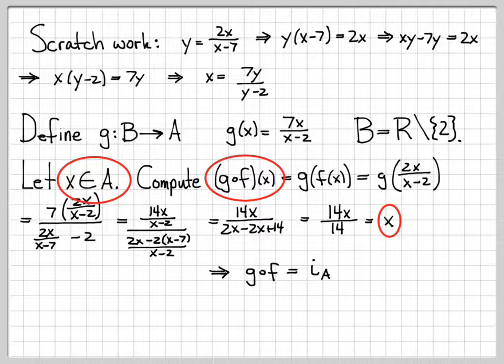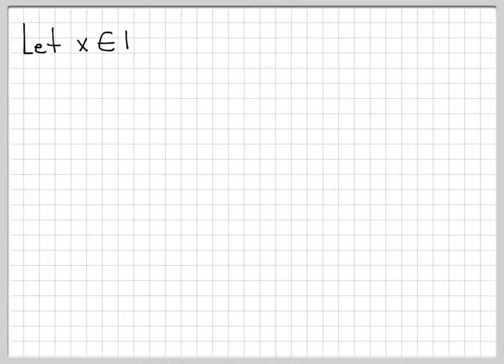So we started with an arbitrary element of A, computed g composed of f, and got x back. We've shown that g composed of f is indeed the identity function i sub A. That's the first thing we had to check.